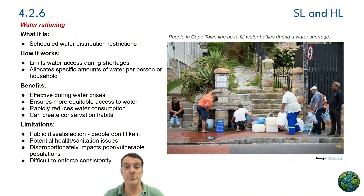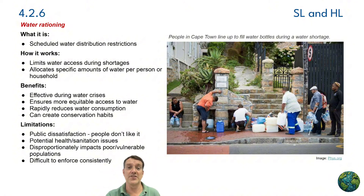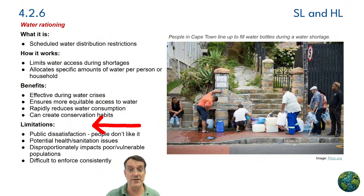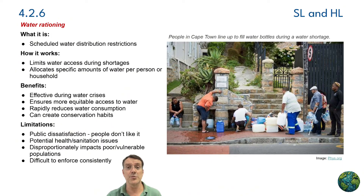Water rationing refers to scheduled restrictions on water distribution during periods of water shortage. It works by limiting access during specified times and allocating specific amounts of water per person or household. The image shows Cape Town residents lining up for water during the city's notorious 2018 Day Zero crisis. Benefits include effectiveness during crises, more equitable access compared to price-based restrictions, rapid consumption reduction, and the potential for creating lasting conservation habits. Limitations include public dissatisfaction, potential health and sanitation issues when implemented poorly, disproportionate impacts on vulnerable populations, and challenges related to enforcement.